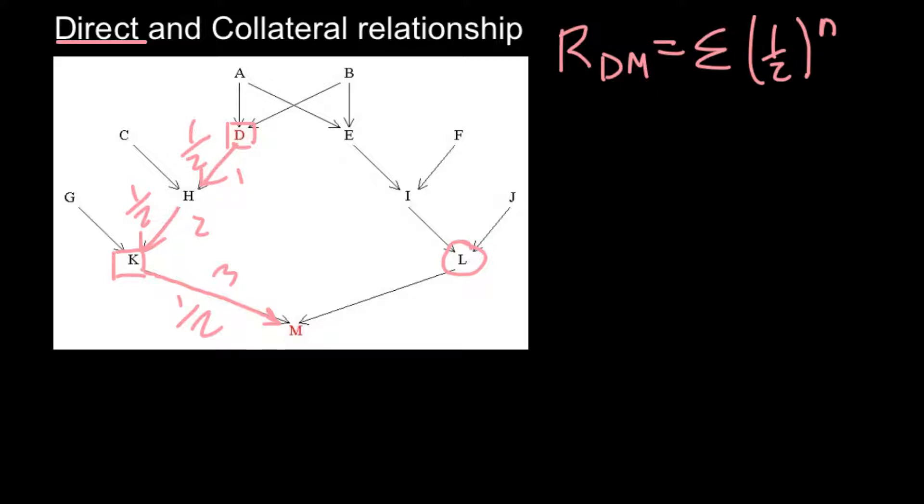And now we can calculate our direct relationship. So R D M direct would equal to one half raised three. So direct relationship would give us one eighth. And now we can calculate collateral relationship.